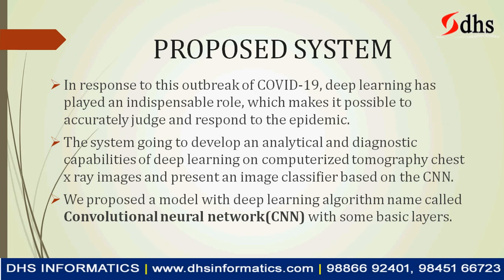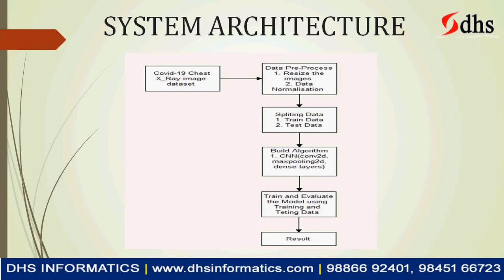In the proposed system, we have a dataset of normal patients' X-ray images as well as COVID patients' X-ray images. We build a training model using a convolutional neural network, test the X-rays to determine if a patient has COVID, and achieve more than 80% accuracy. The system architecture involves: providing the X-ray image dataset, preprocessing (resizing images, data normalization), splitting into training and test data, training the CNN model, evaluating it using test data, and producing a confusion matrix and accuracy results.